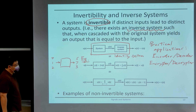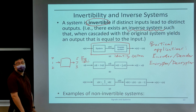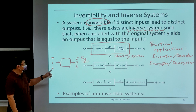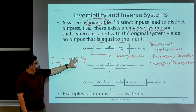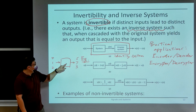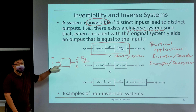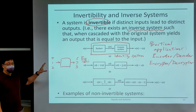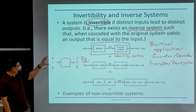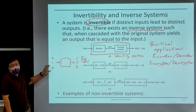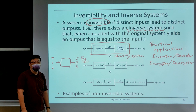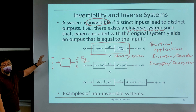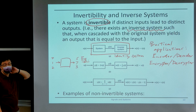When is a system non-invertible? A system is non-invertible when you have multiple inputs that lead to a common output. So in that case, when you are given the output, you don't really know which input caused this output.